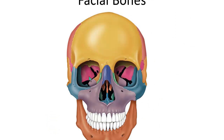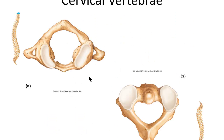Moving on to the vertebrae — we have vertebrae in the neck, which we call the cervical vertebrae. There are seven cervical vertebrae. This slide shows the first two vertebrae of the neck, the atlas and the axis. You need to know that the cervical vertebrae are found in the neck and that we have seven of them.